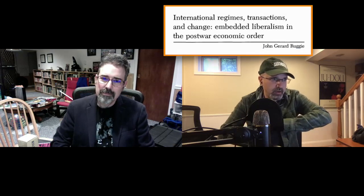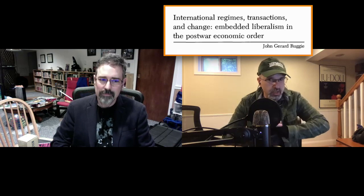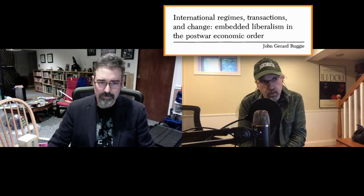So today we are going to be talking about 'International Regimes, Transactions, and Change: Embedded Liberalism in the Post-War Economic Order.' This is a 1982 piece by John Gerald Ruggie, who was actually at Columbia when we were there. It was published in International Organization, Volume 36, Issue 2, in a special issue on international regimes edited by Stephen Krasner. And even when we got to Columbia in 1995, this was still a big thing that people were reading and talking about. There's a lot of wheel reinvention going on here.